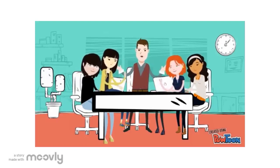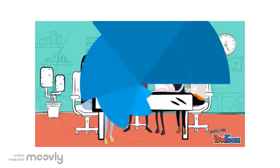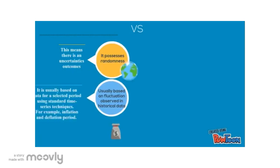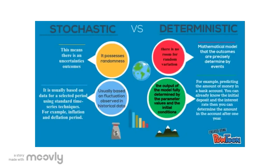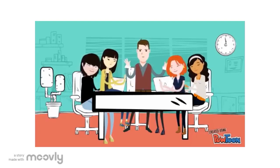Now it's my turn to ask. Amy and Belle, can both of you tell me the difference between deterministic and stochastic models? As far as I remember, stochastic models possess randomness, while in deterministic models there is no room for random variation. As for stochastic models, it is usually based on fluctuations observed in historical data. However, in a deterministic model, the output is fully determined by parameter values and initial conditions.